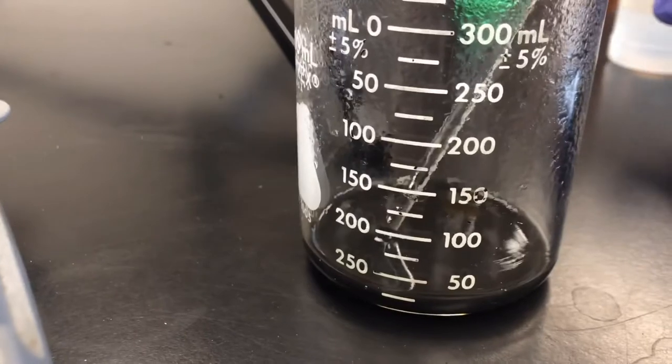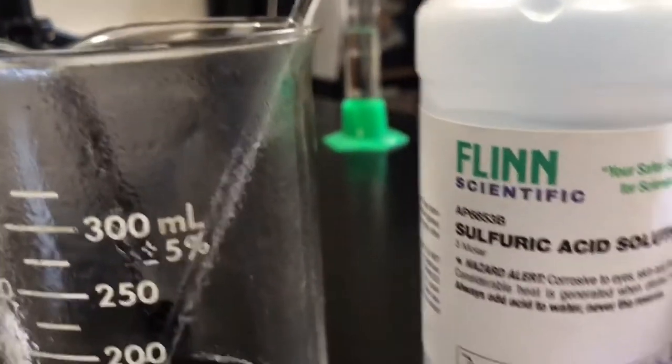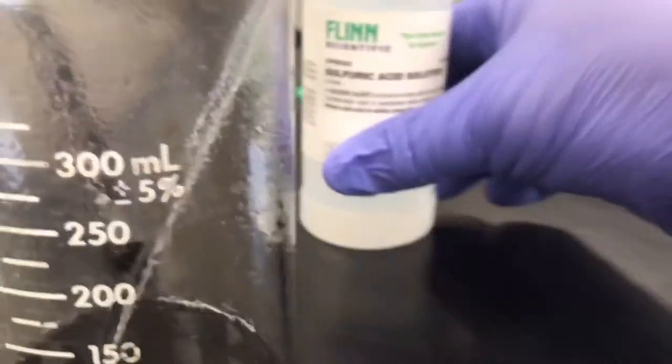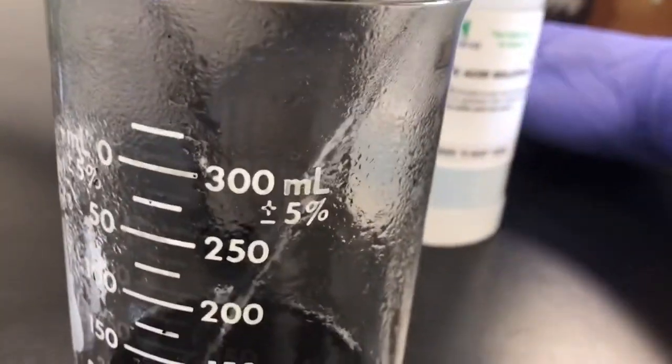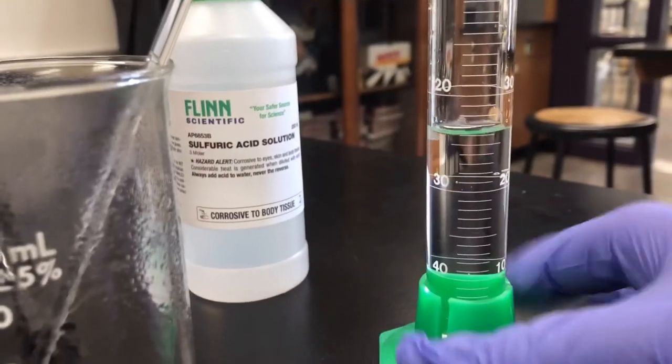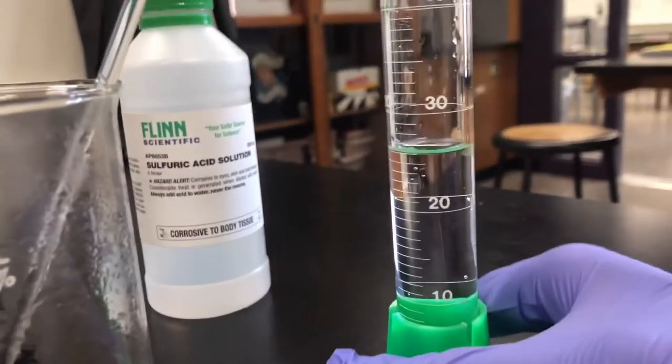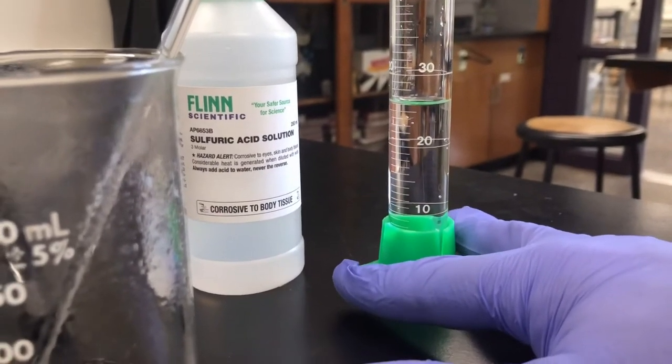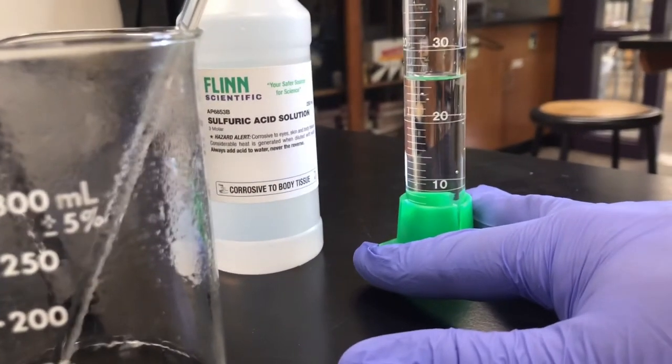So now we are going to put in three molar sulfuric acid, H2SO4. We're going to add this, we got 25 milliliters of this. We're going to add this at about five milliliters at a time. We are not going to add this quickly.